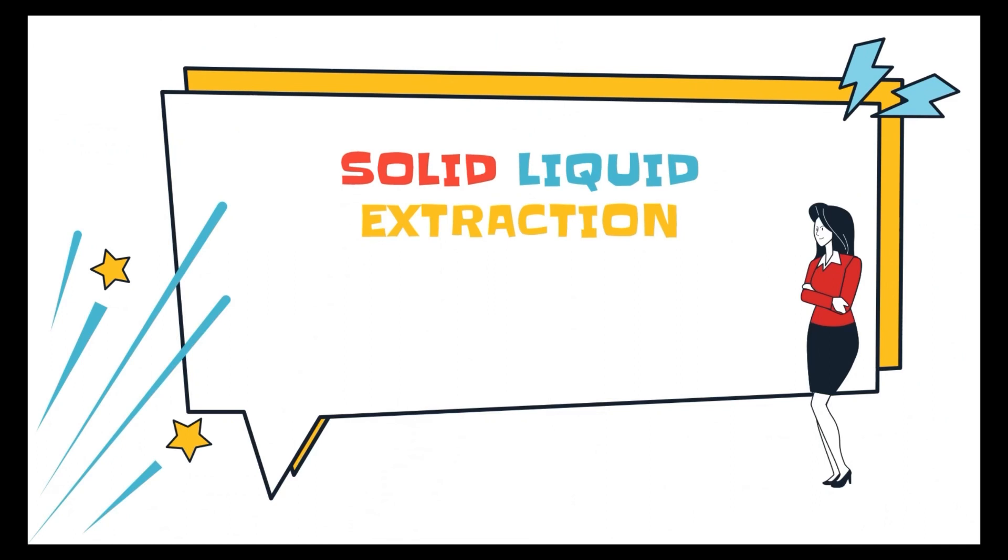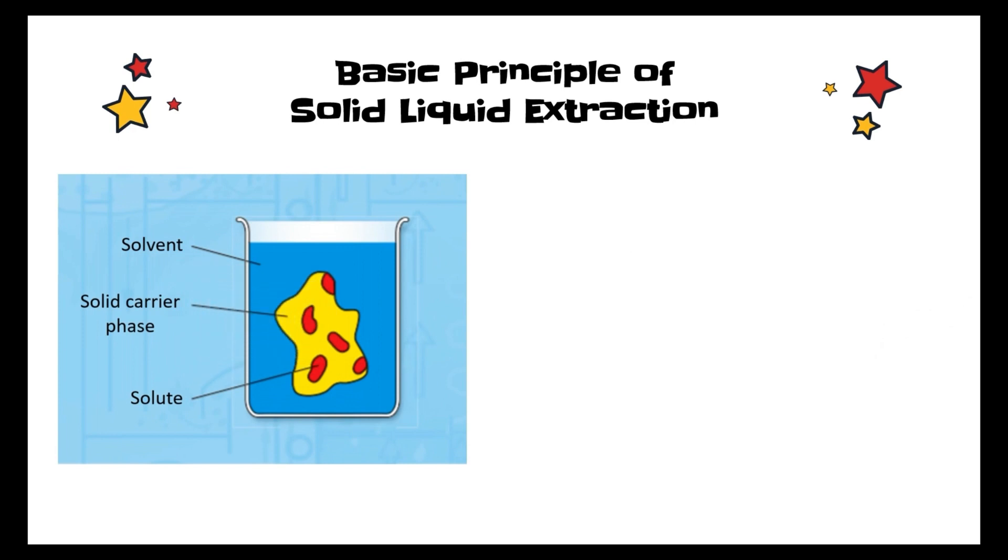Therefore, as the name states, solid-liquid extraction is the separation of solute from solid by using liquid solvents. Let's look into the basic principle of solid-liquid extraction. From this diagram, we can see that there's a yellow solid containing red solute immersed in the solvent. This is the condition before extraction occurs.